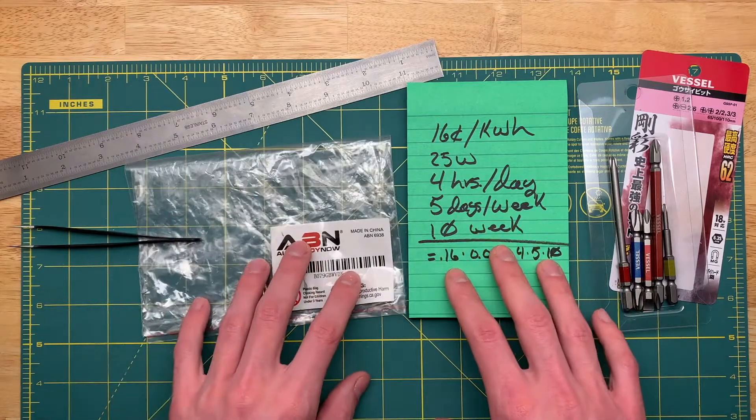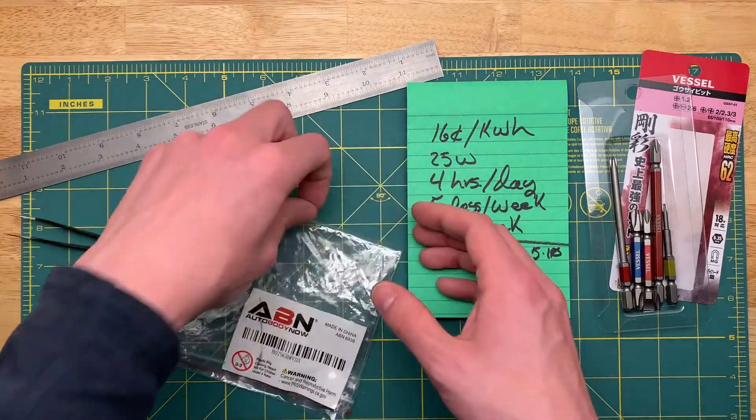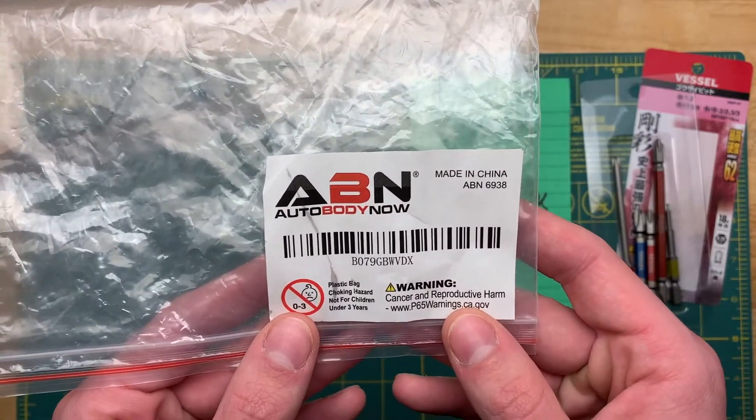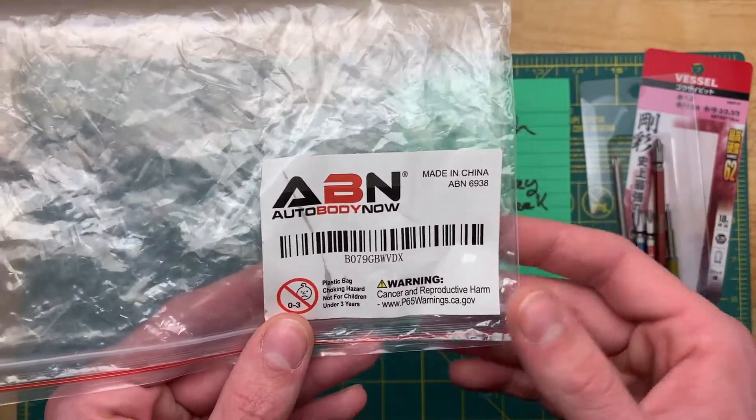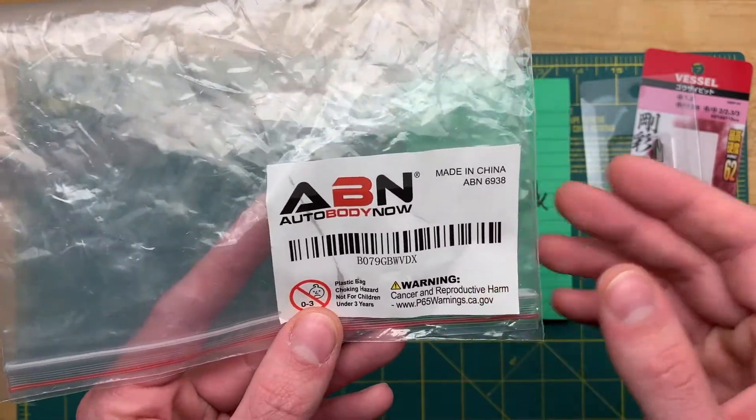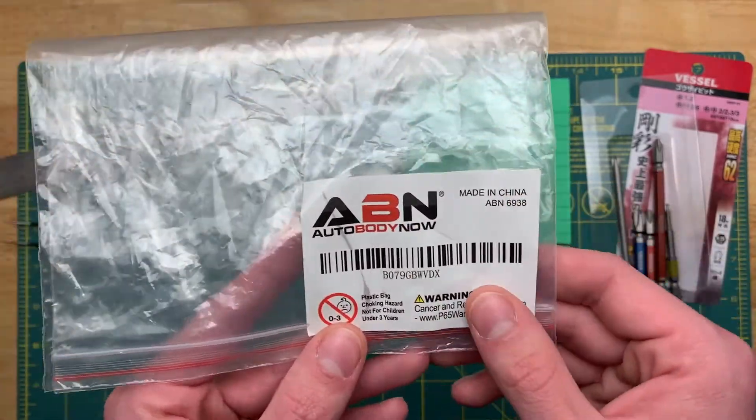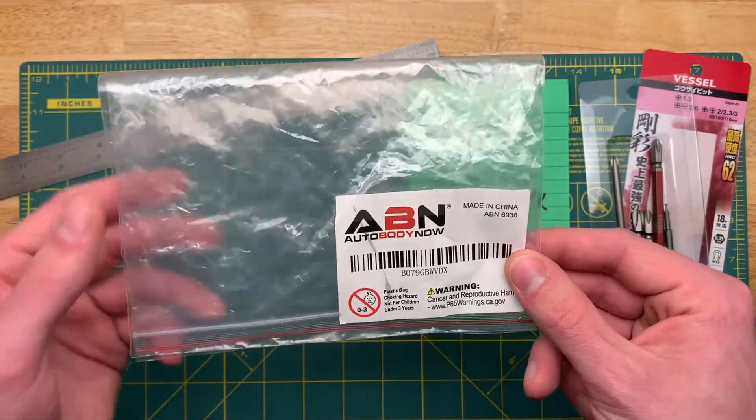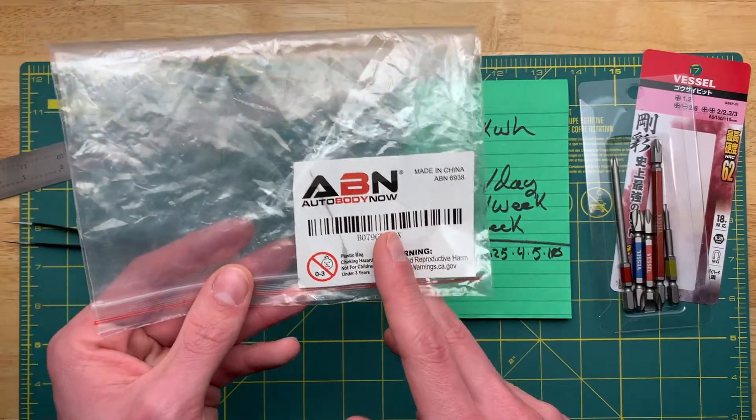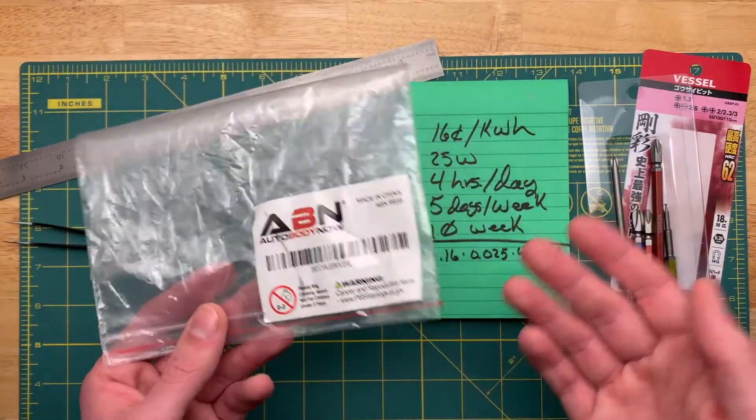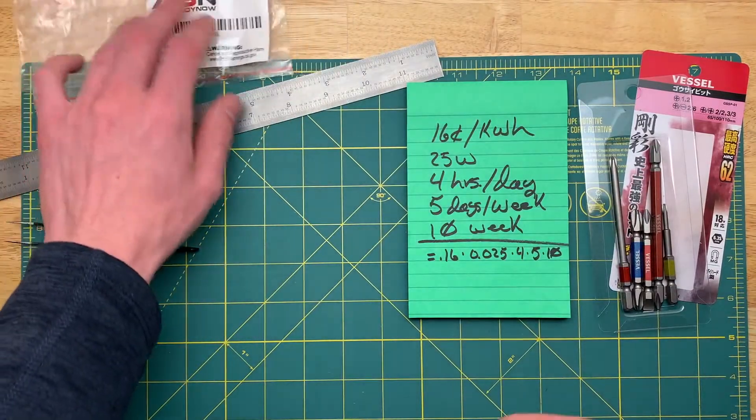One is the heater that I got is an ABN. This was off of Amazon for about 16 bucks somewhere in there. This is obviously a cheap Chinese knockoff of a higher quality one. Don't go super cheap on these because it may have a potential to be a fire hazard, but make your own wise decision there.